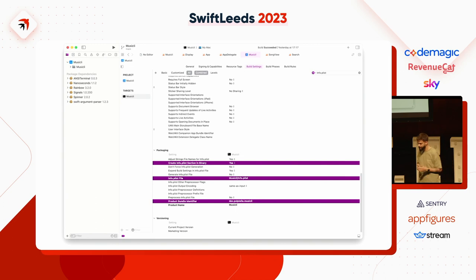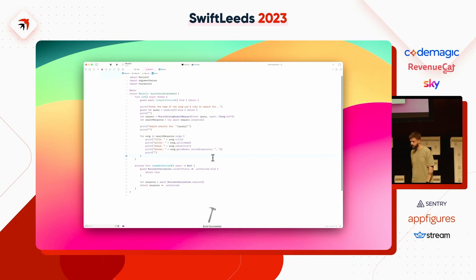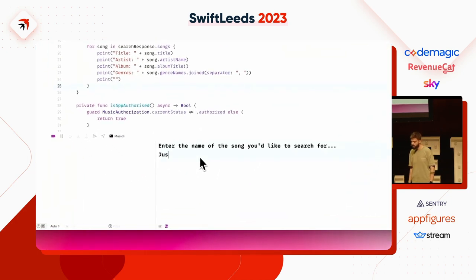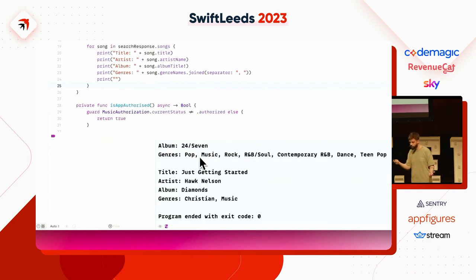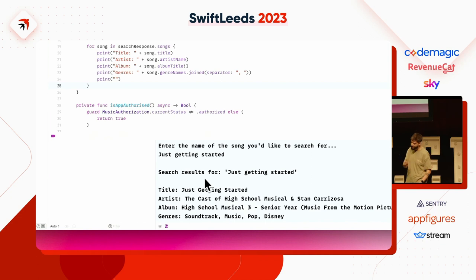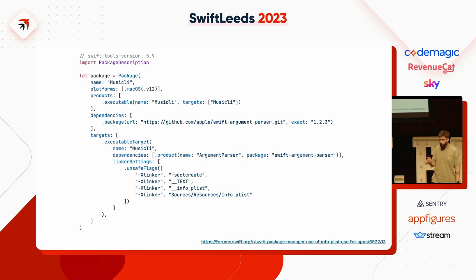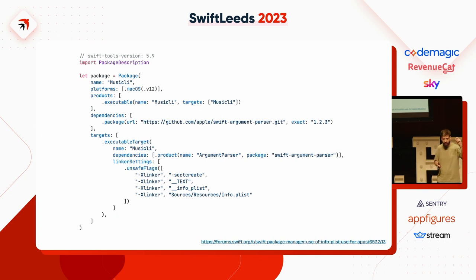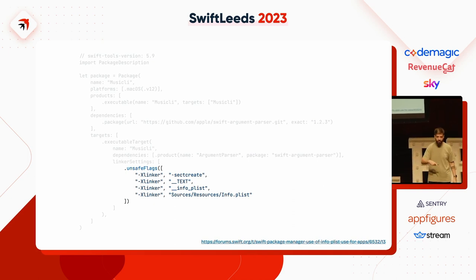Now running this again — we request the song, use the exact same query, and this time there are no errors. We get all the information back. We've tricked the executable into thinking it's an application, so it can make requests to MusicKit — it has a bundle identifier that can talk to App Store Connect, find the capabilities for MusicKit, and retrieve tokens. This is also possible in a Swift package: you need linker settings I found on the Swift forums — I've left a link on the slide. I tested it out last night.